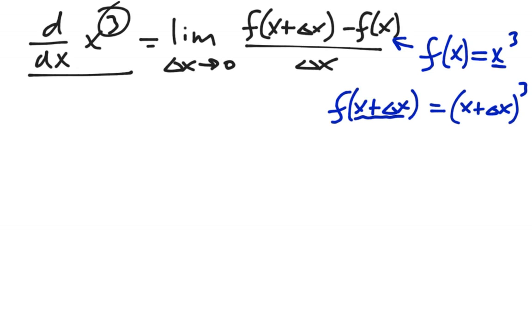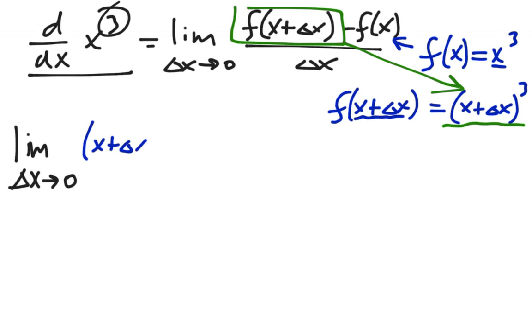Sweet. Pretty straightforward. Now let's go ahead and do this limit. For the first part, we have f of x plus delta x, which is that. And we're going to have to multiply this out, but let's just put it in for now. So we have x plus delta x quantity cubed minus x cubed, all divided by delta x.